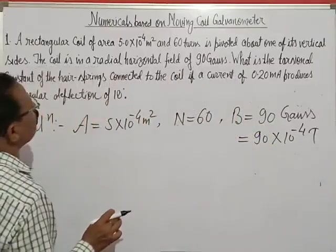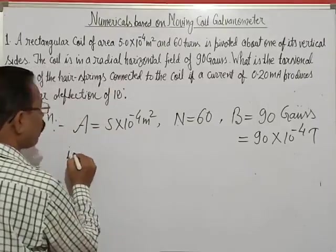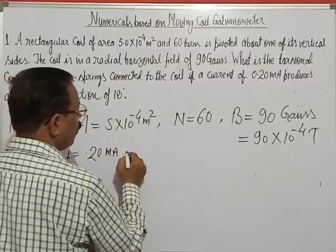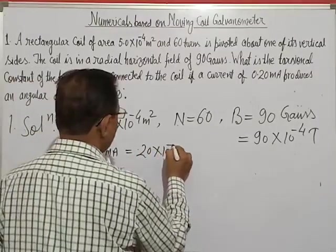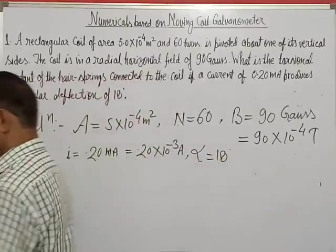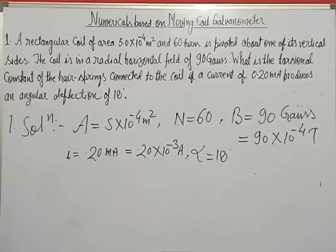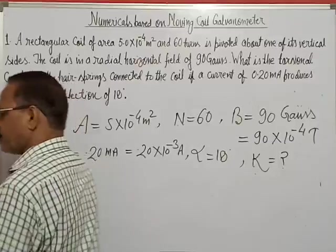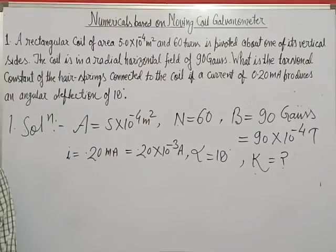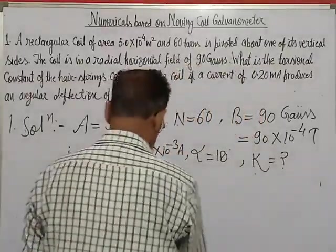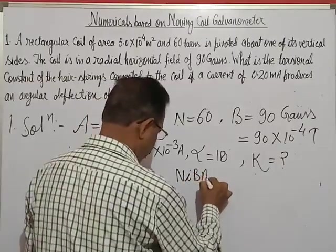What is the torsional constant of the hair spring if a current I = 0.20 milliampere = 0.20×10⁻³ ampere produces an angular deflection of 18 degrees? We have to find torsional constant K. The formula is: K = NIBA upon alpha, where alpha is angular deflection.